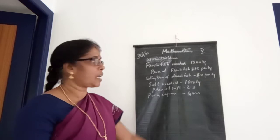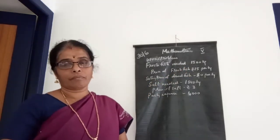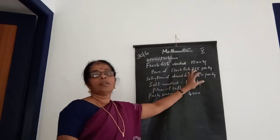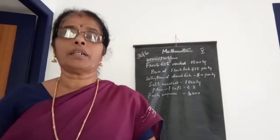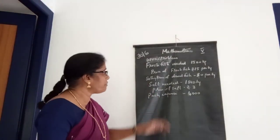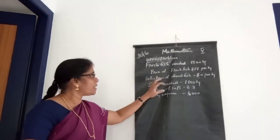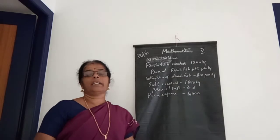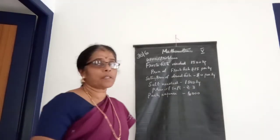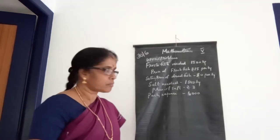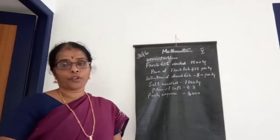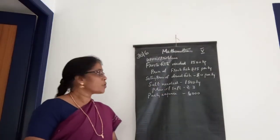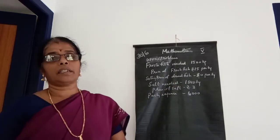So 1500 into one-third gives 500 kg of dried fish. Now the price of fresh fish is rupees 15 per kilogram. After drying, we can sell that dried fish at rupees 80 per kilogram. Some expenses are also needed — salt is required for the drying purpose, and 1800 kilograms of salt is needed.